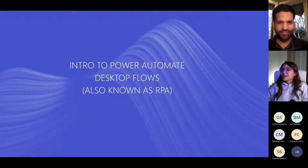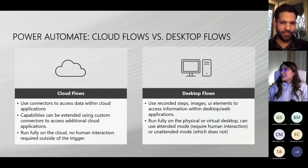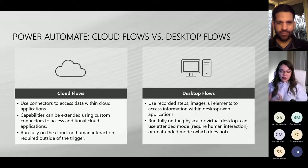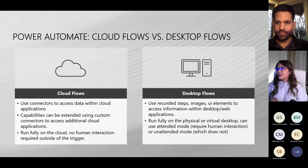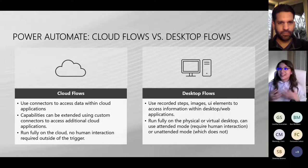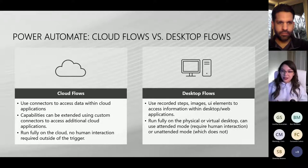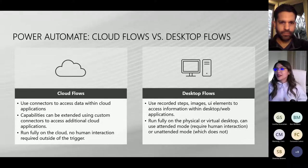I wanted to start by level-setting on Power Automate. There are two types of workflows: cloud flows and desktop flows. It's exactly what it sounds like — cloud flows run in the cloud and desktop flows run on the desktop. Cloud flows have access to different connectors that Microsoft has created, and you can extend those capabilities by creating custom connectors to your own applications.